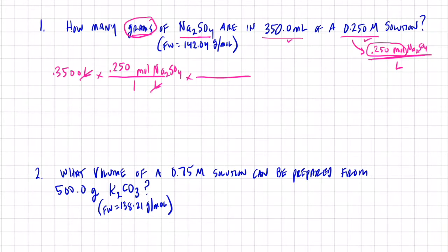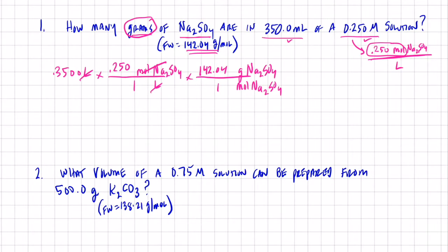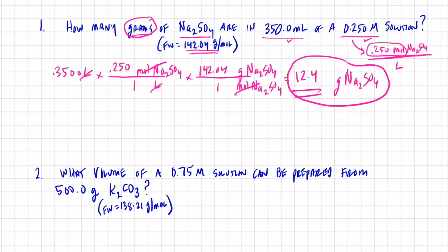Now I want grams of sodium sulfate, so let's hop out of moles of Na₂SO₄ and get into grams of Na₂SO₄. The formula weight is 142.04 grams per mole, so moles divide out and I'm left with grams of Na₂SO₄. Plugging in: 0.350 × 0.250 × 142.04 gives me, to three significant figures, 12.4 grams.